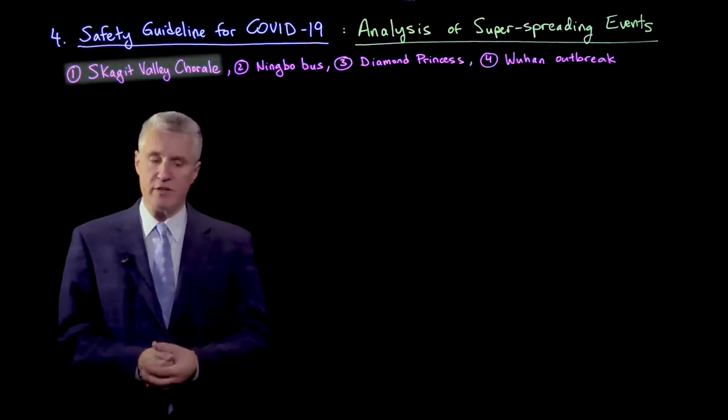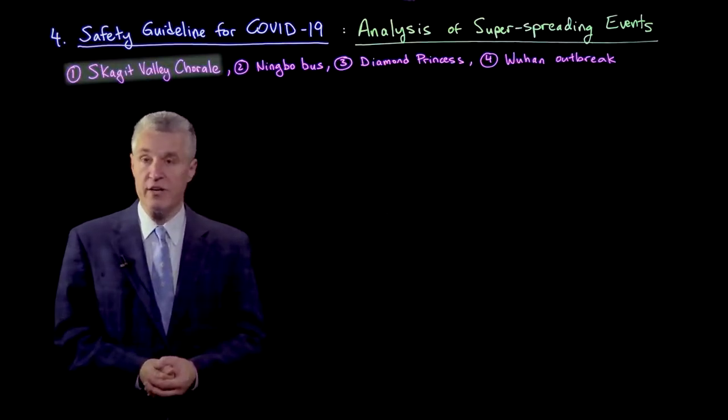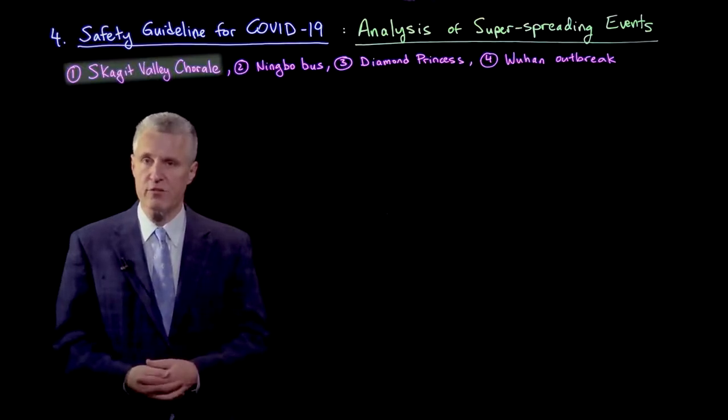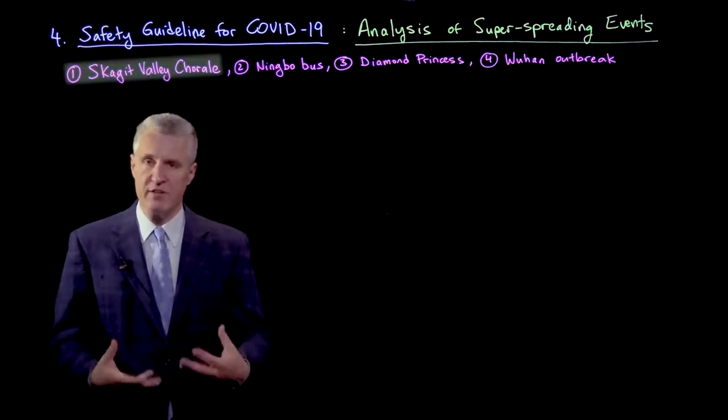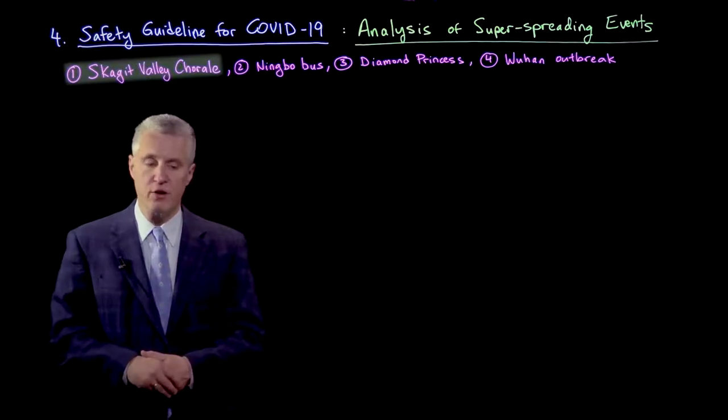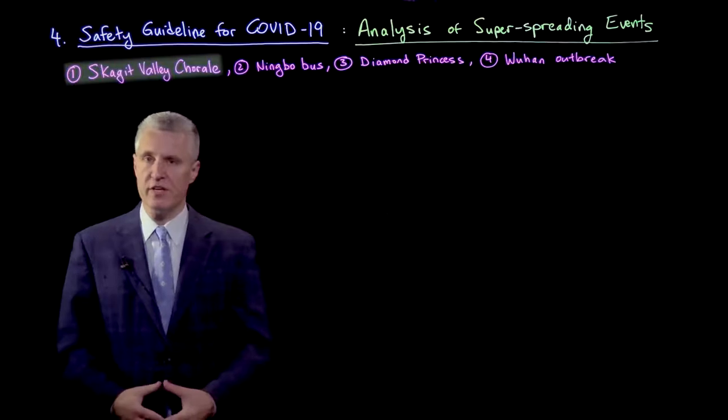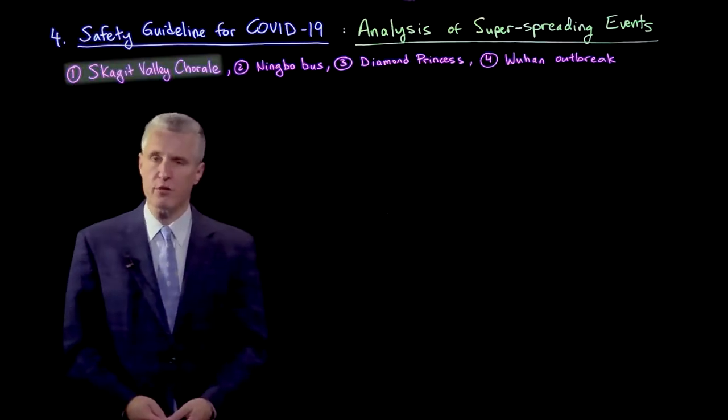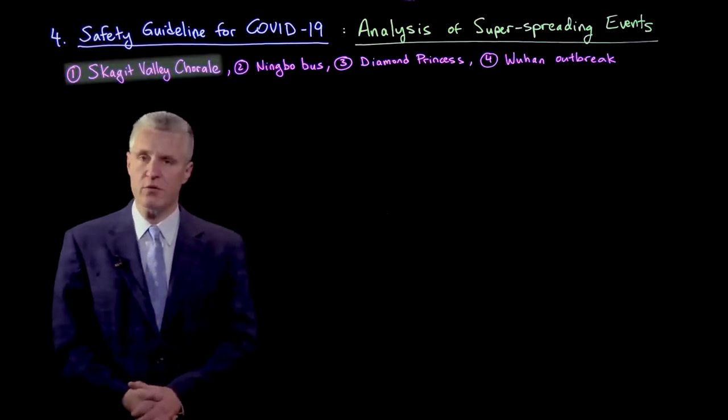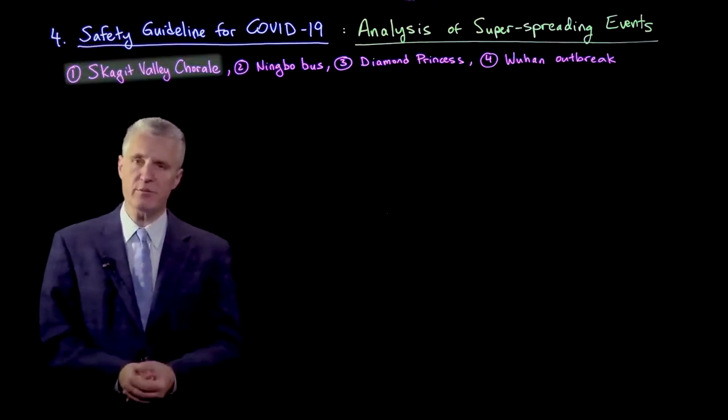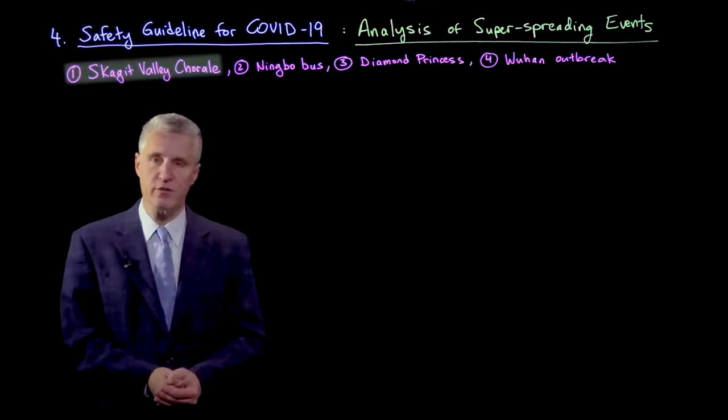When we do that fitting, we come out with a value of CQ, the number of infection quanta per volume in the exhaled breath of the infected person, around 900 quanta per meter cubed. A published study of Miller et al came to a similar conclusion of 870 quanta per meters cubed. So we can take that to be a reasonable value for singing.